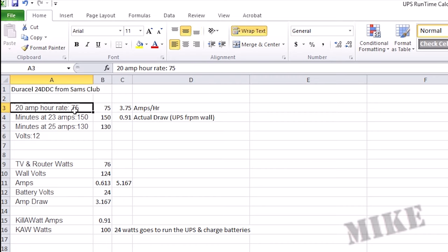Most batteries, if not specified, are specified at a 20 hour rate, which I don't know why. But what this means is if you discharge this over 20 hours, we can get 3.75 amps per hour and get the expected capacity. If I discharge it faster, I'm going to get far less runtime.